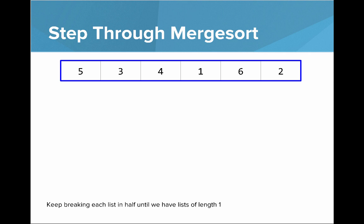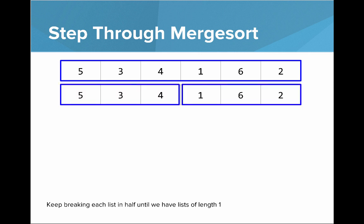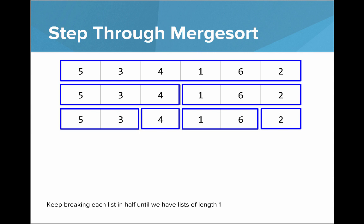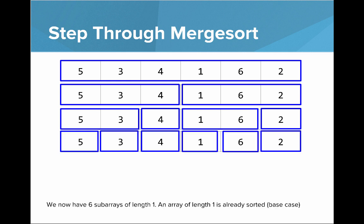Let's step through the Merge Sort algorithm. In this first part we keep breaking each list in half until we have lists of length 1. Here's our full array, now we have two smaller arrays. We split those arrays — they're uneven because of integer division. Then we split again until we have our 1-element arrays. We have six sub-arrays of length 1, and this is the base case — an array of length 1 is already sorted.